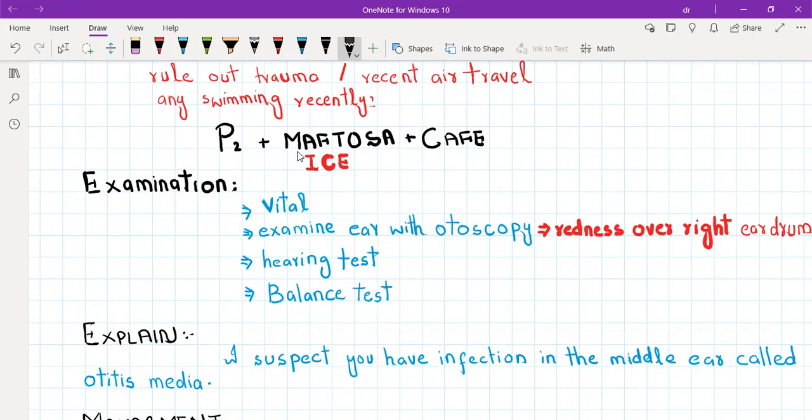Then you should ask about MAPTOSA: medications, allergies, family history. If it is a child presenting with otitis media, no need to ask about family history of otitis media. What you should ask is if anybody at home is smoking. If it is a child, no need to ask about occupational history. You should ask about developmental history instead.